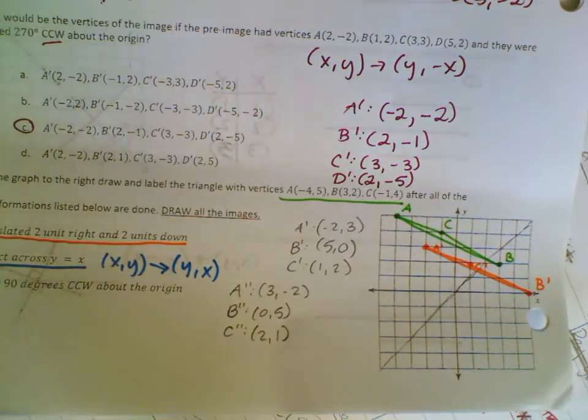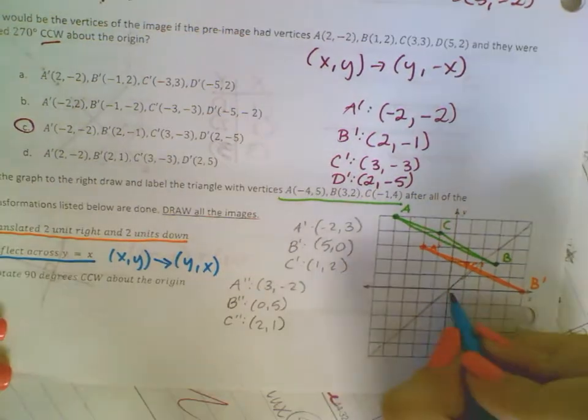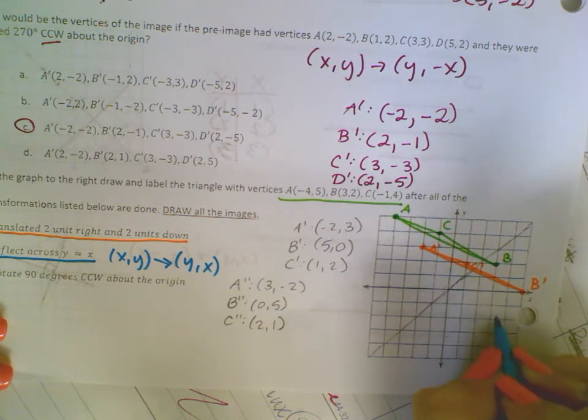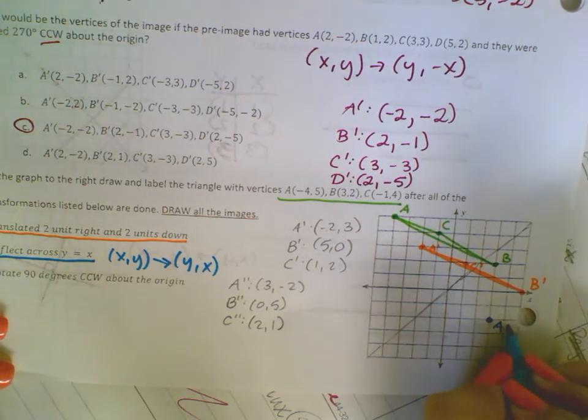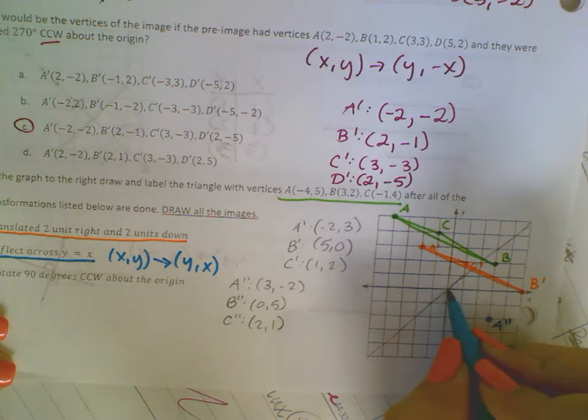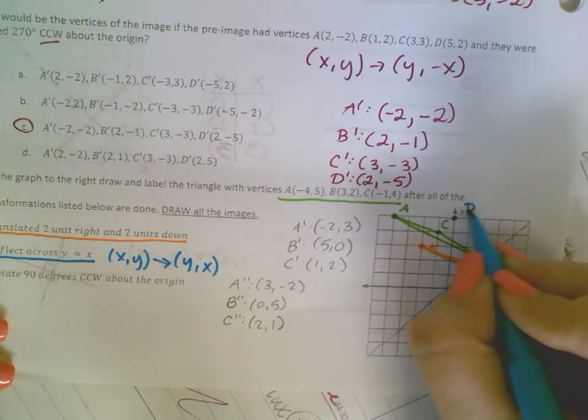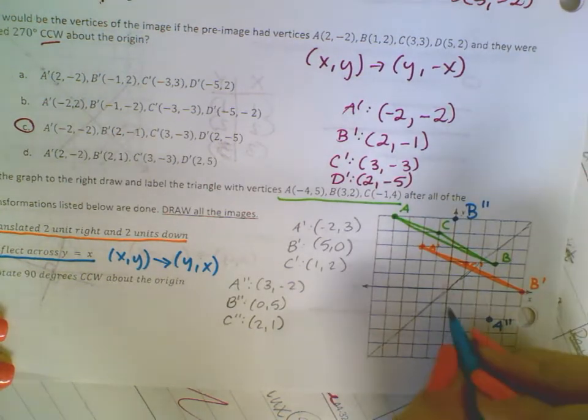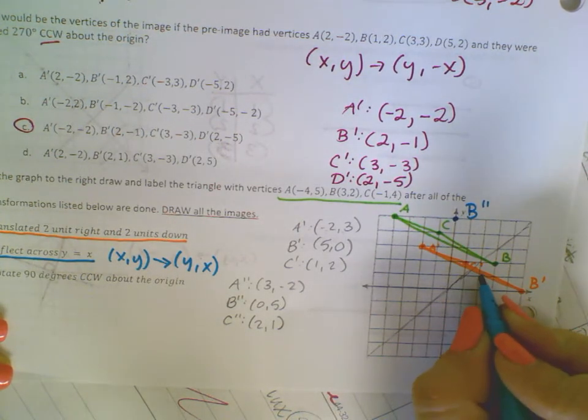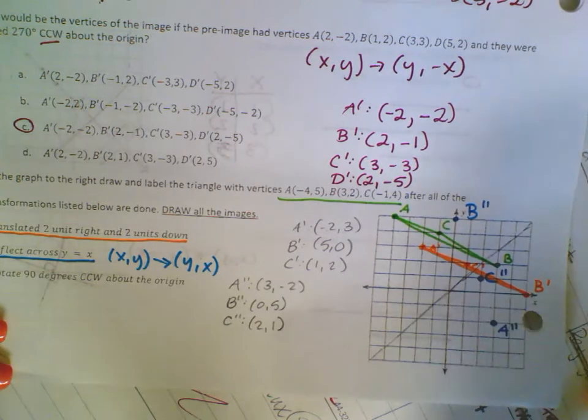I'll graph that out in blue. So A is at 3, negative 2. There's my A double prime. B double prime is at 0, 5. So here's my B double prime. And C is going to be at 2, 1. And that's my C double prime. So there I go with my blue triangle.